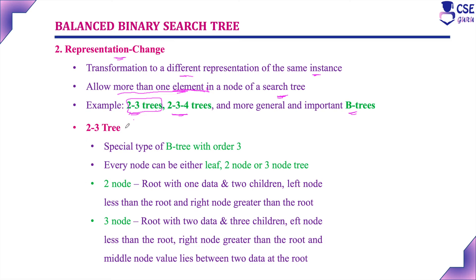We are going to discuss only two-to-three trees with examples. A two-to-three tree is a special type of B tree with order 3. Every node can be either a leaf node, a two-node tree, or a three-node tree. A two-node is a root with one data element and two children — left node less than the root, right node greater than the root. A three-node tree is a root with two data elements and three children, where the middle node value lies in between the two data elements at the root.